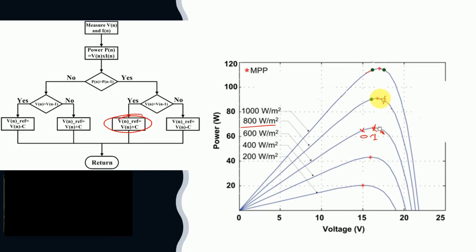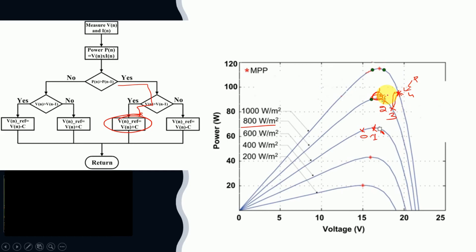Consequently, instead of moving to the expected point, the system jumps to point number two. Point two has power greater than point one and voltage greater than point one, so the algorithm again follows the same path and gives another positive increment. After this increment, the system moves to point number three, which is already far from the maximum power point. At point three there is yet another change in irradiation, and the system moves to point number four — which also has higher power and higher voltage than point three — so another positive increment is given.